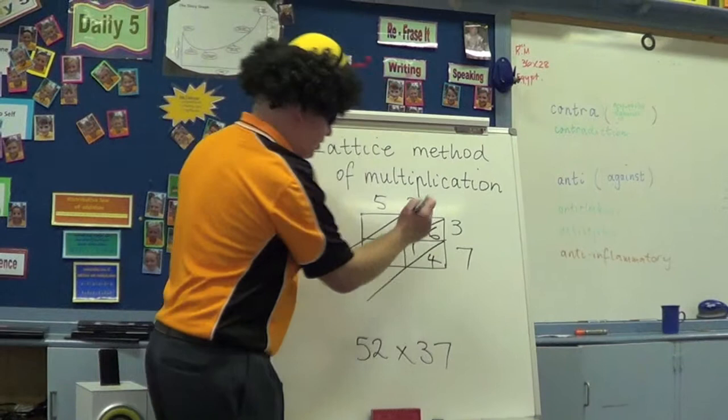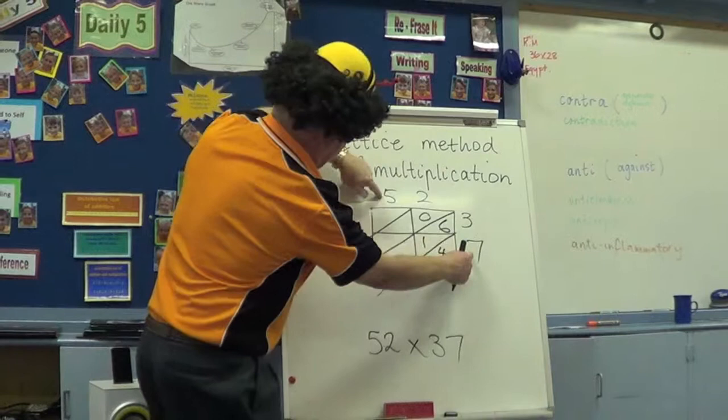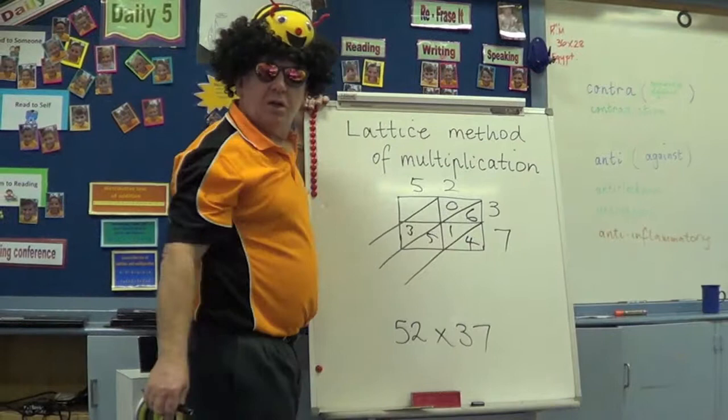There we go. 7 times 5. 35. 7 times 5 comes in here. 35. We're looking good. And 3 times 5. 15. Excellent.